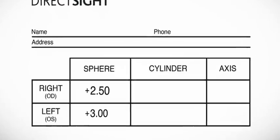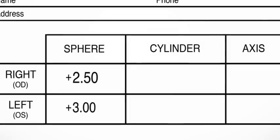On your glasses prescription there will be a range of numbers, plus or minus, listed under various headings. The top line of numbers will relate to your right eye — these are the OD numbers. The second line relates to your left eye, the OS numbers.